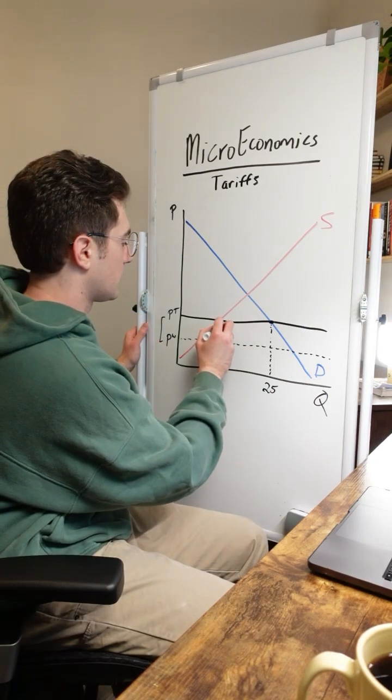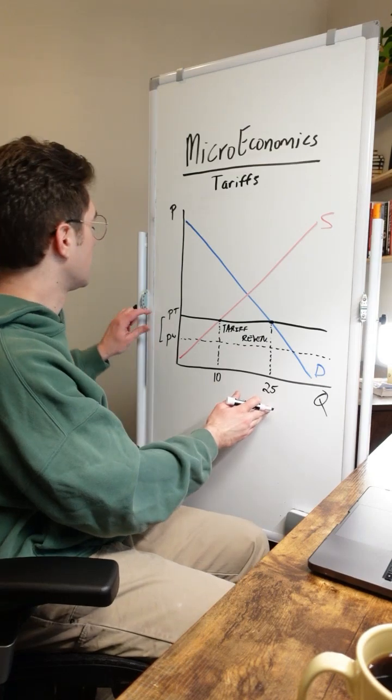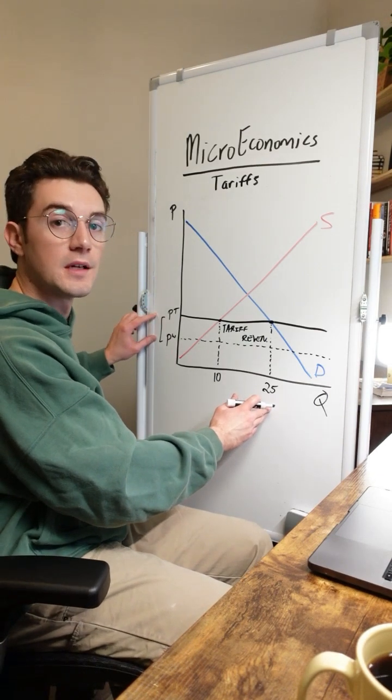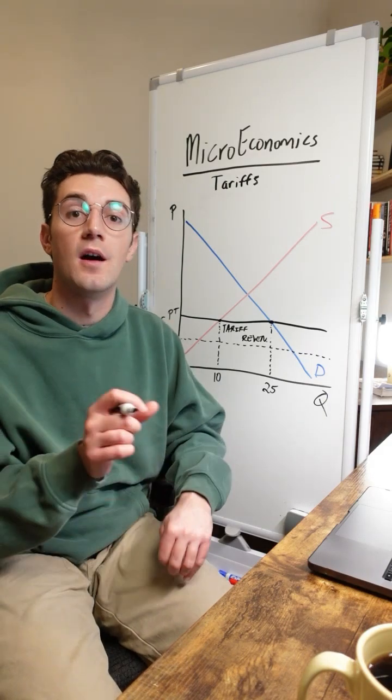This rectangle right here is tariff revenue. The area of this - the base is the number of units imported, and the height is the tariff amount per unit. Multiply those together and you get the total tariff revenue that the government's collecting on imports.